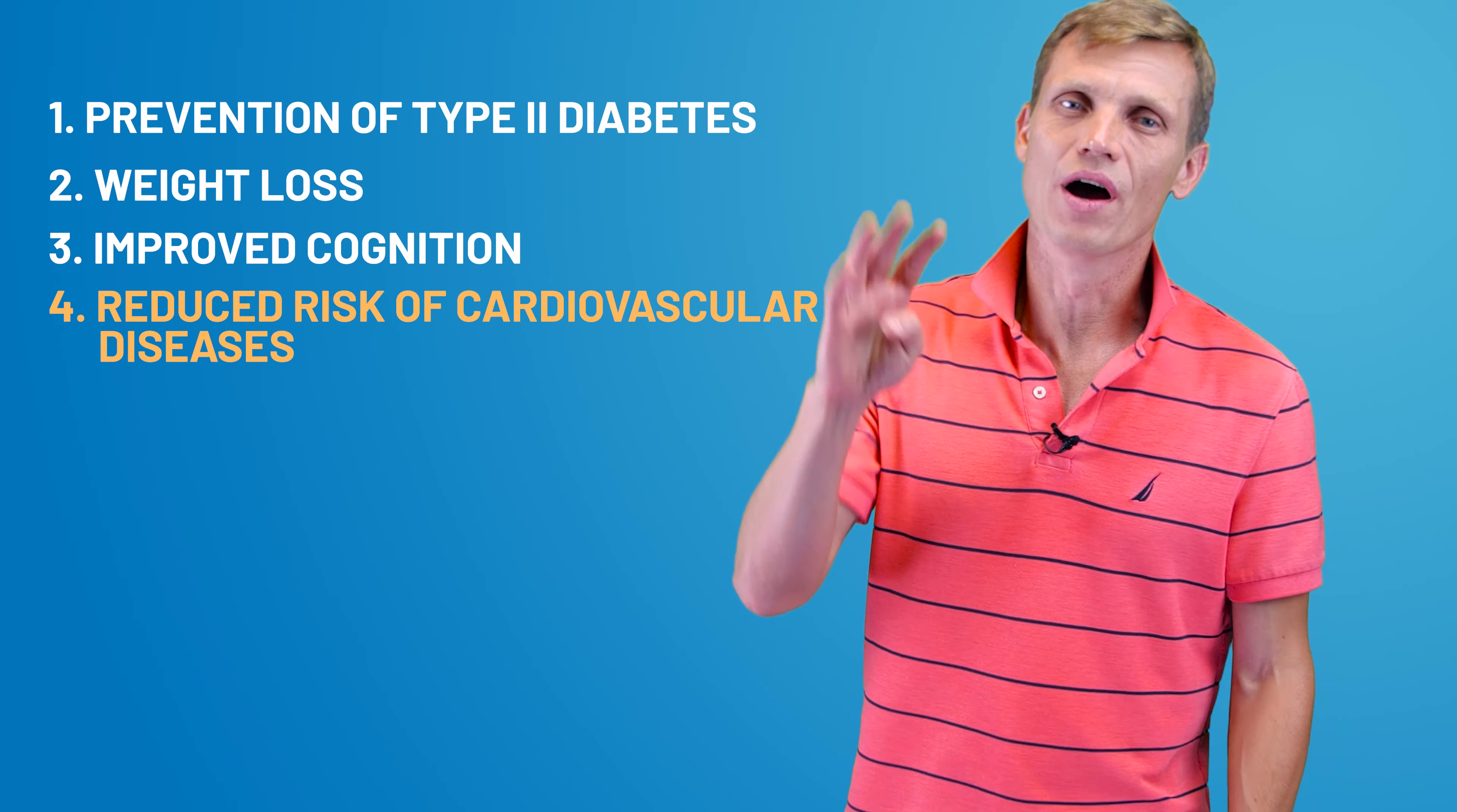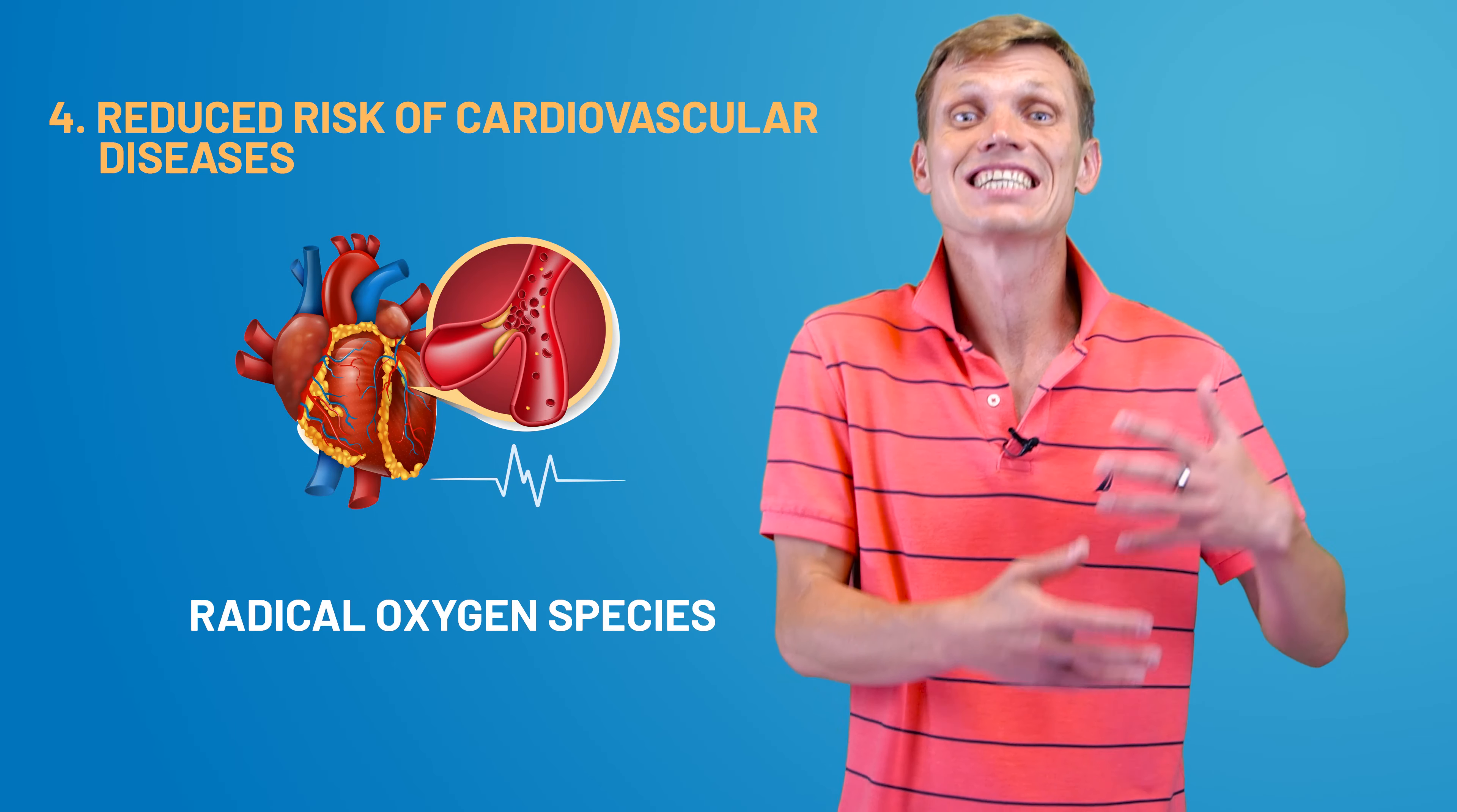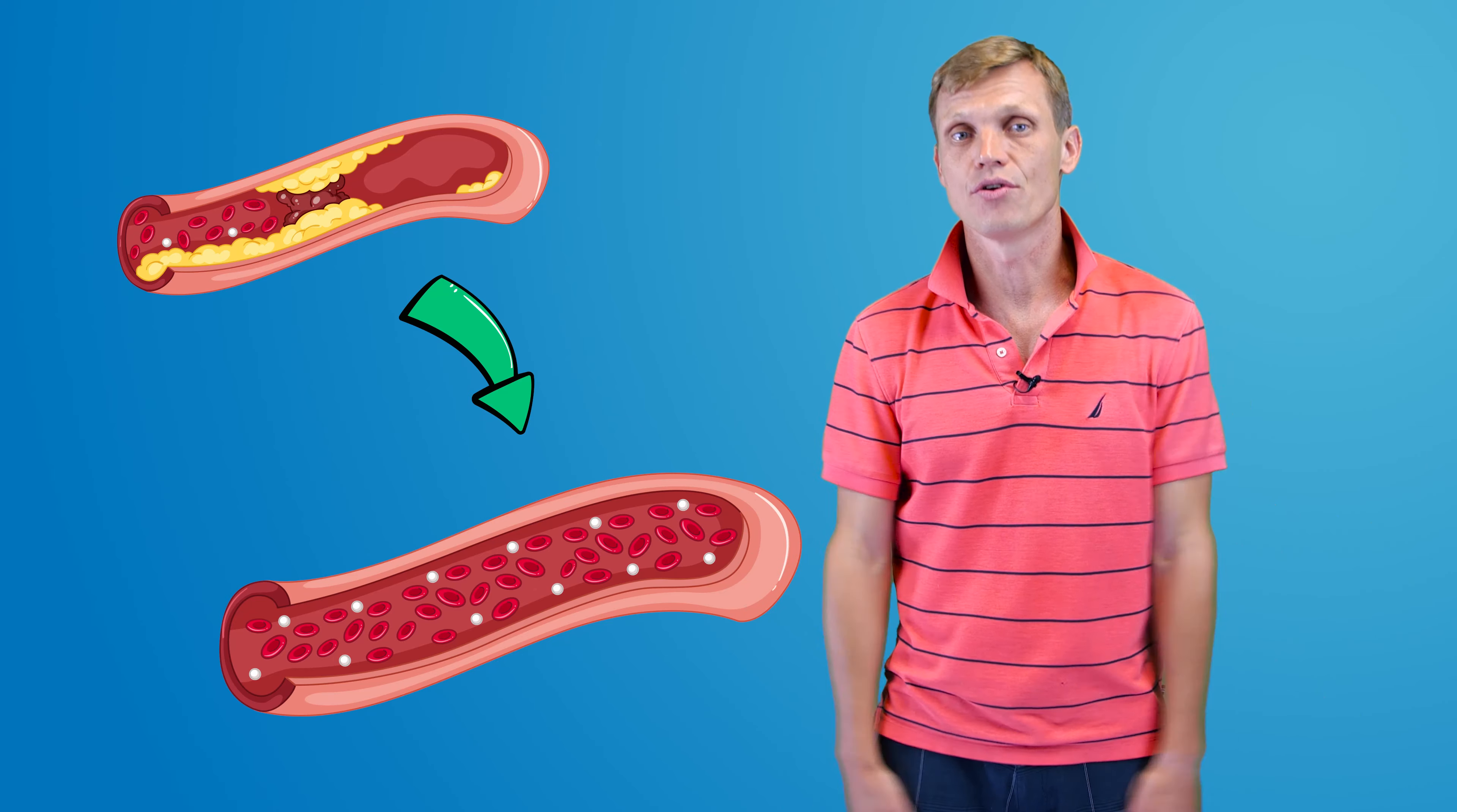Moving to number four, reduce risk of cardiovascular diseases. This occurs because IF helps the body to process metabolic debris, such as radical oxygen species, also known as oxidative stress, to be washed away. As a result, a systemic inflammatory status reduces, preventing damage to our blood vessels. On top of that, because glucose and lipid metabolism activities are diminished, our blood vessels don't build up new deposits and stay healthy in the longer term.